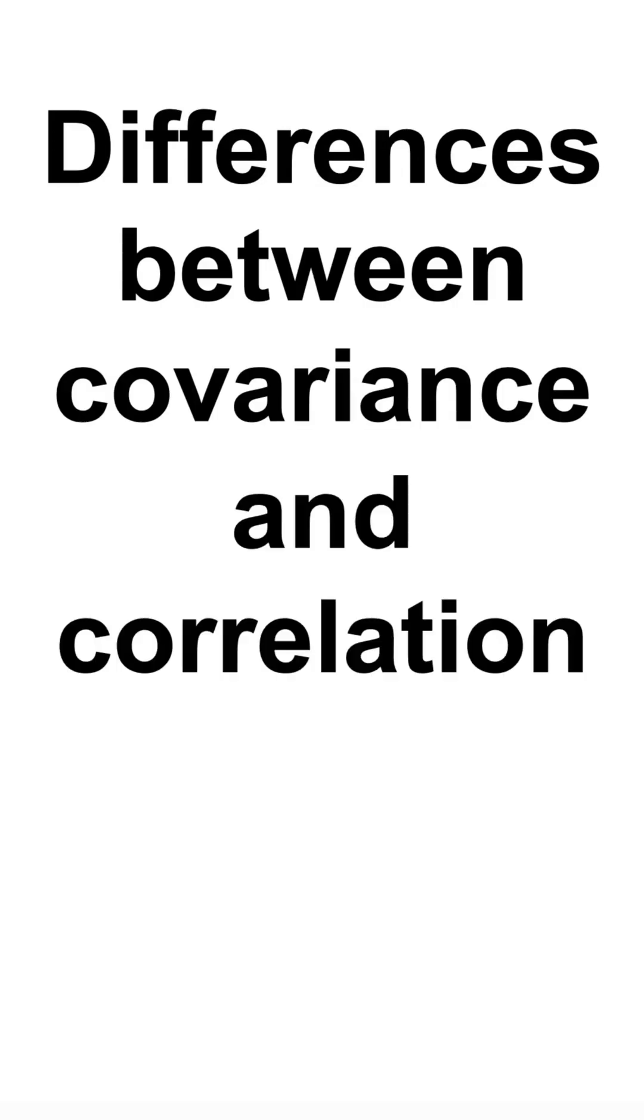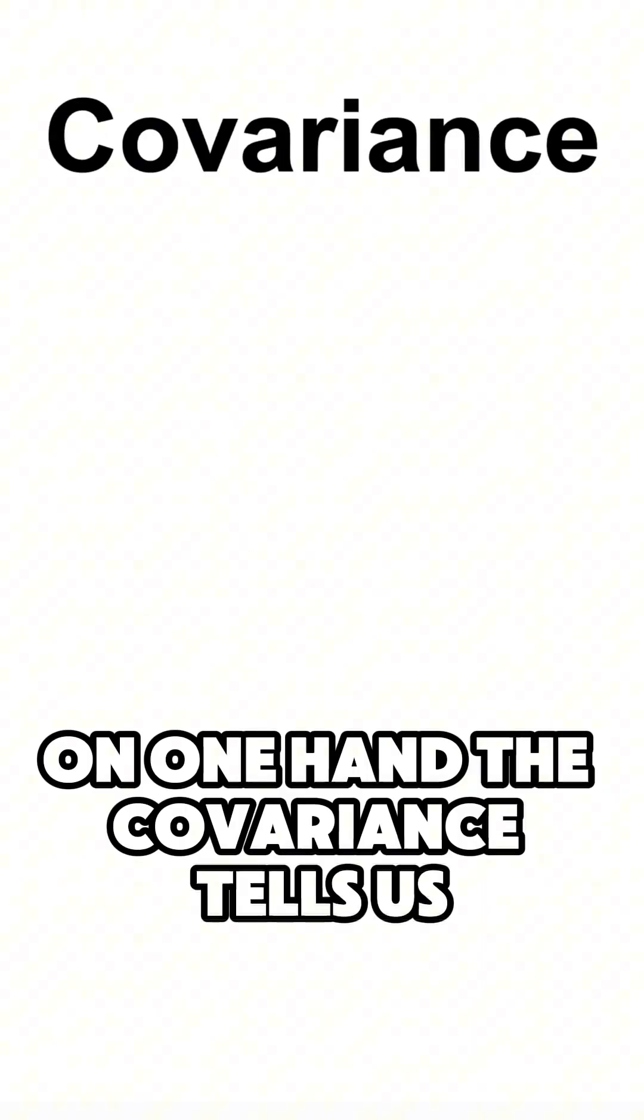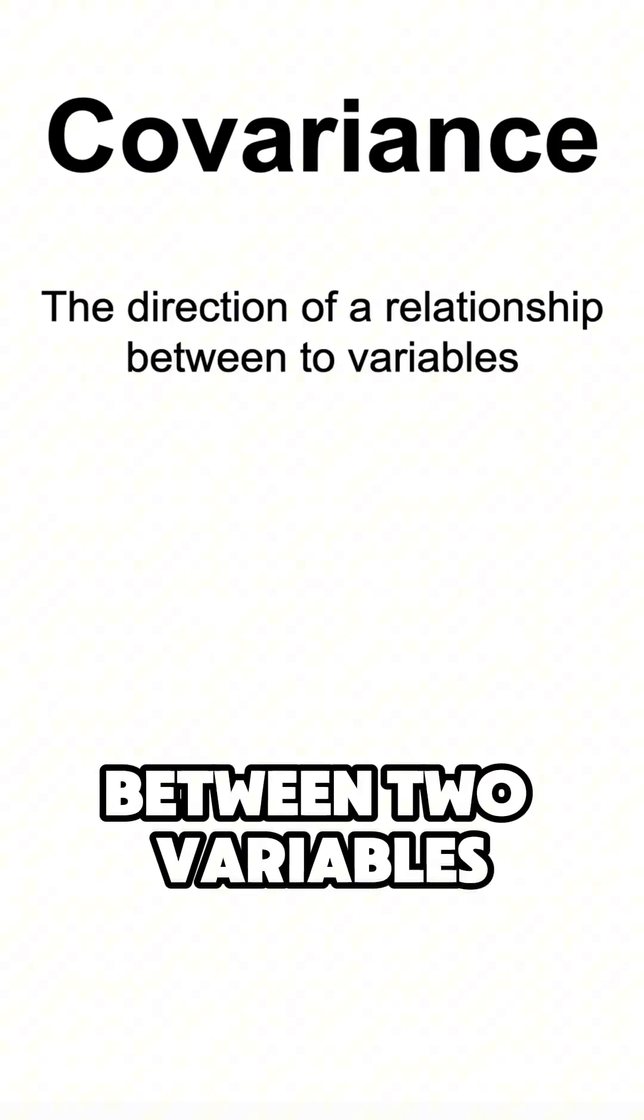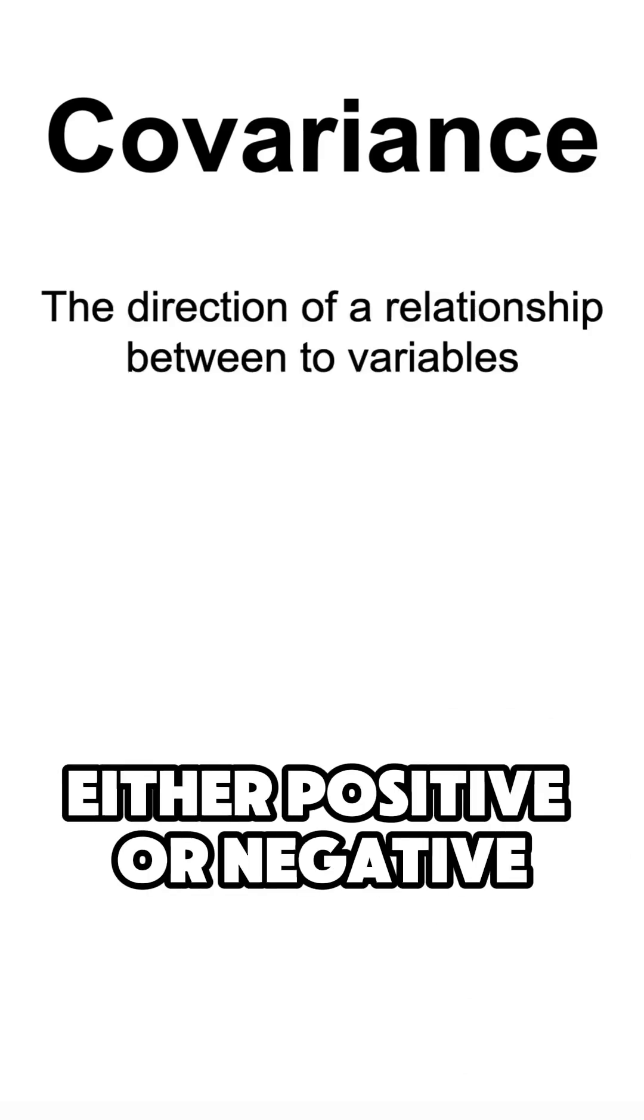What's the difference between covariance and correlation? Well, on one hand, the covariance tells us the direction of a relationship between two variables, either positive or negative.